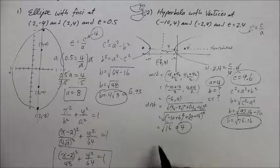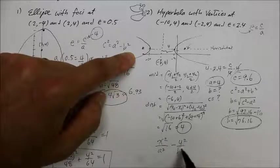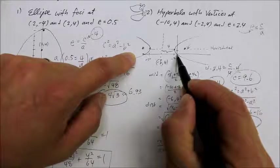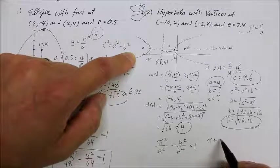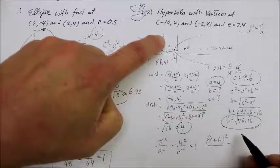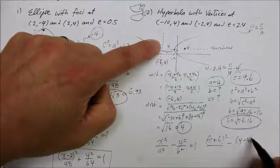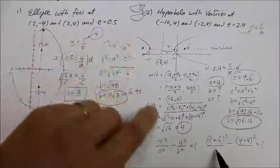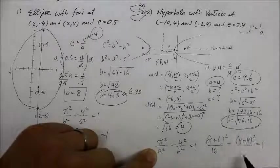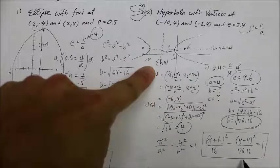Now I can write the standard form. For a hyperbola with a horizontal transverse axis it's x squared over a squared minus y squared over b squared equals one. This has been translated — six units on x and four units on y — so it becomes: (x + 6) squared over 16 minus (y - 4) squared over 76.16 equals one. As ugly as it is, that is the standard form representing this hyperbola given this eccentricity.